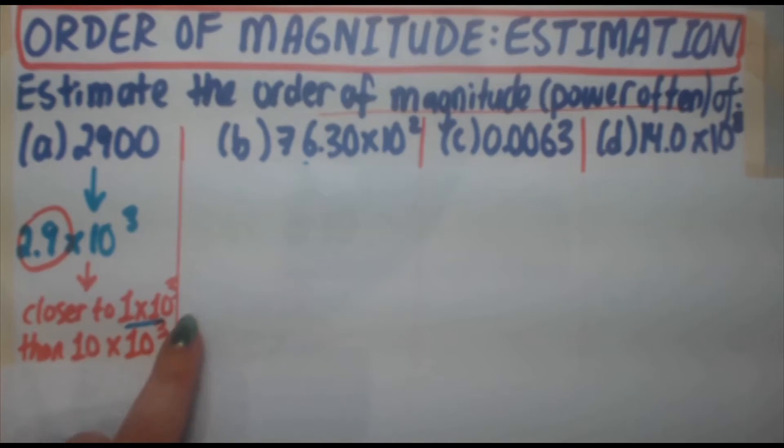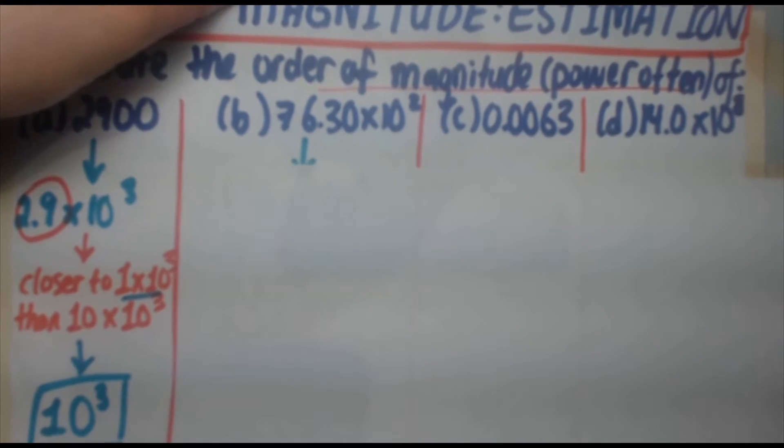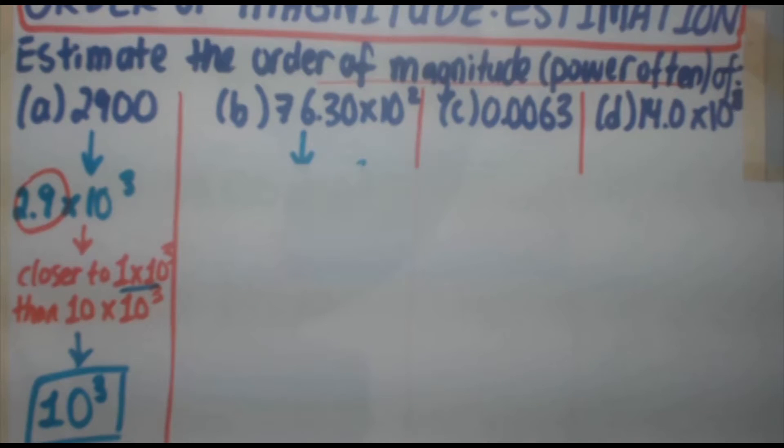But it's easier to see it like this, because they're all 10 to the 3. You've got a 1 and a 10. Obviously, 2.9 is much closer to 1 than it is to 10. Therefore, it's closer to 1 times 10 to the 3, giving it an order of magnitude of 10 to the 3. So I hope that part made sense. If not, we're going to do another example right now just to help it sink in a bit.